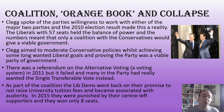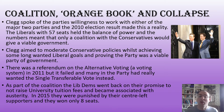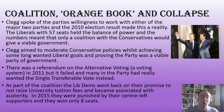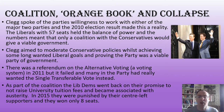Clegg had spoken about the party's willingness to work with either of the two major parties in the run-up to the 2010 election, and the result made this a reality. The Liberals won 57 seats and held the balance of power. The arithmetic in the House of Commons meant the only viable government would be a coalition between the Liberal Democrats and the Conservatives. Clegg's aim was to moderate Conservative policies whilst achieving some long-wanted Liberal goals and proving the party was a viable party of government, which he believed would have long-term positive electoral impact. One of their demands was a referendum on voting systems, as first-past-the-post had always badly affected the Liberal Democrats.